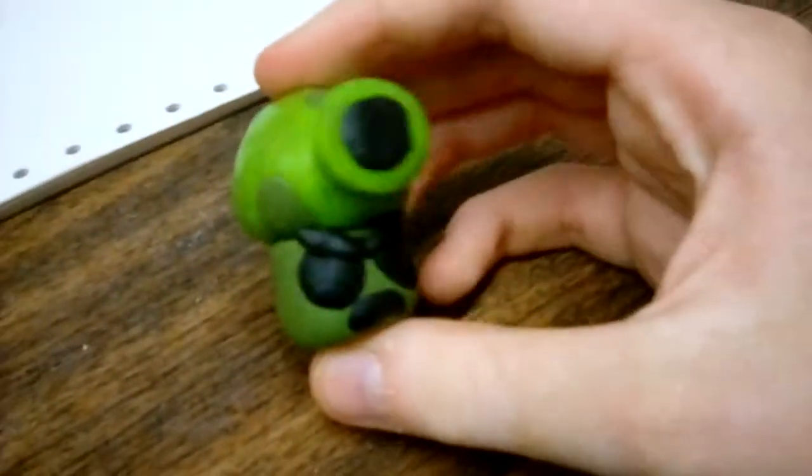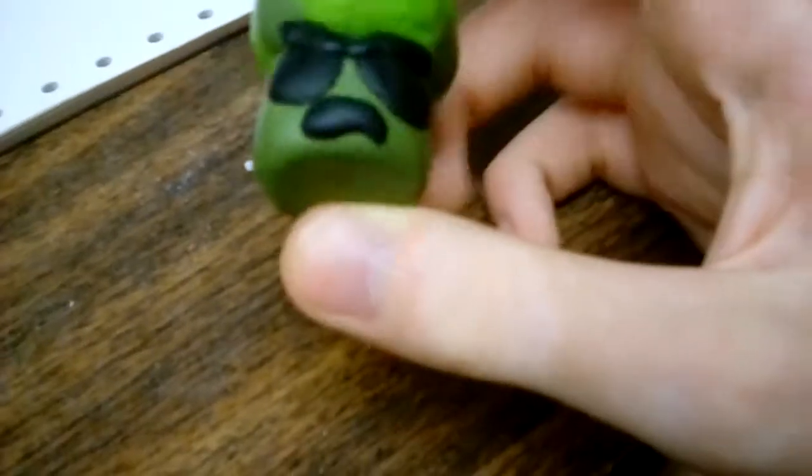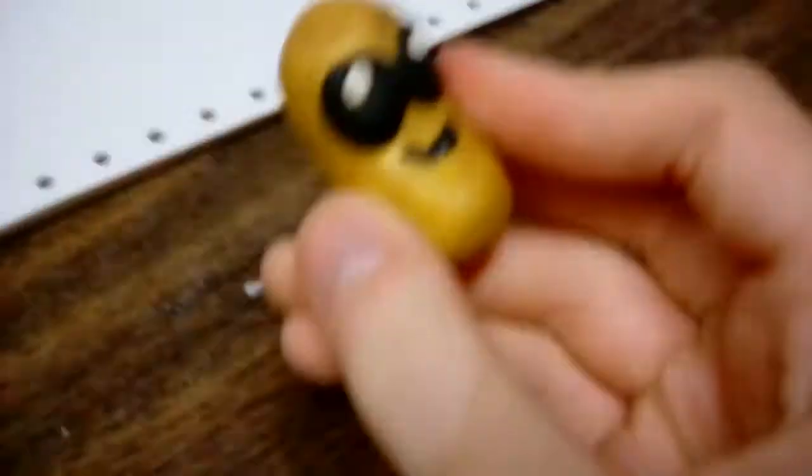Here we have the Goop Shroom. I think the Sun Bean was the first clay figure I've ever made that actually incorporated the little white dots at the top of the eyes. Speaking of which, the Sun Bean.